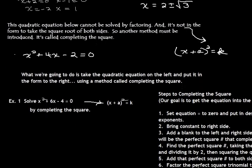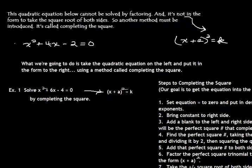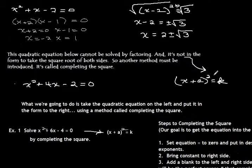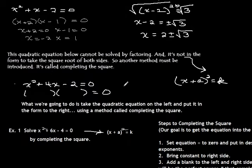Now let's move down here. The quadratic equation below can't be solved by factoring it, and it's not in the right form to do the taking the square roots of both sides. So this one is not factorable — I can't think of any combination of factors I can use to set it equal to zero. And I can't just take the square root of both sides. So what we're going to do now is put ones that cannot be factored into this form so that we can use the taking the square root of both sides method.